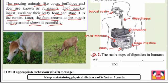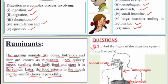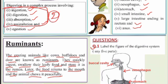Question number two: what are the main steps of digestion in humans? The steps are: ingestion, digestion, absorption, and assimilation. That completes the answer for question number two.